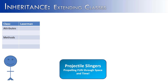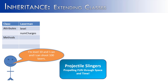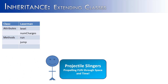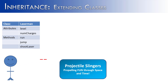When designing Laser Man, we think about two things: what does he have, and what can he do? Laser Man has a level and a number of charges — how many lasers he can shoot. He can run, he can jump, and most importantly, he can shoot lasers from his eyes.